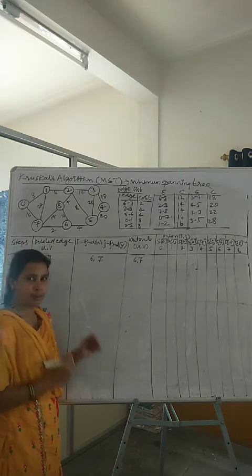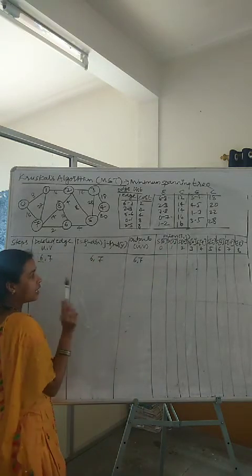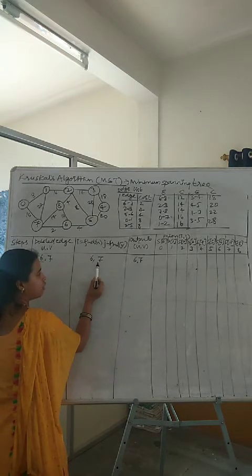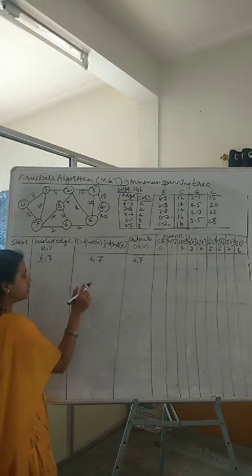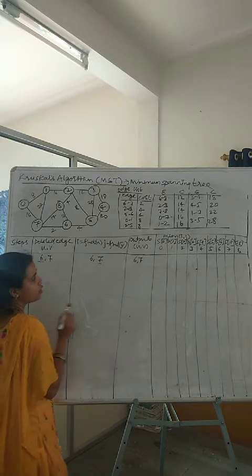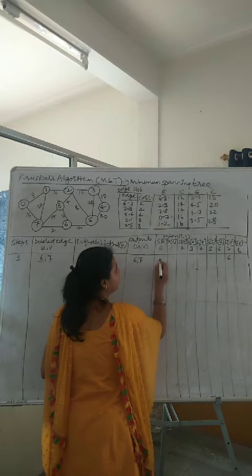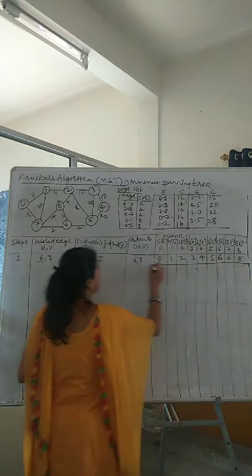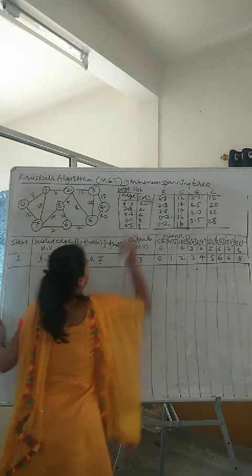For edge 6 to 7: find(u) is find(6), meaning find the root of 6, which is 6 itself. Find(v) is find(7), meaning the root of 7, which is 7 itself. So i equals 6 and j equals 7 — they are different, so we accept this edge in the MST. Now we perform union(i, j), that is union(6, 7), which means store 6 as the root node of 7. Everything else in the root array remains the same. This completes processing of the first edge.